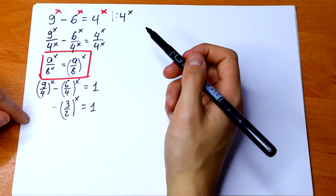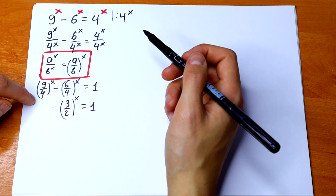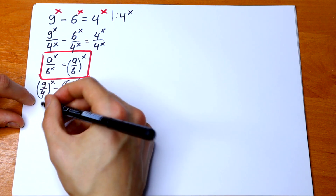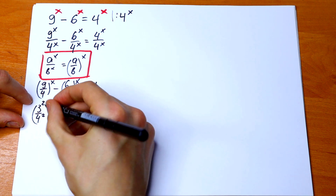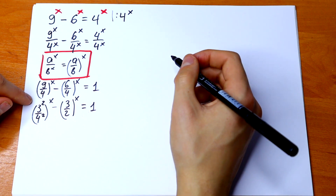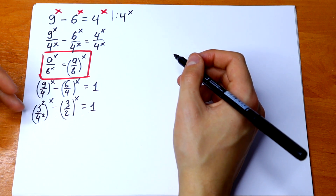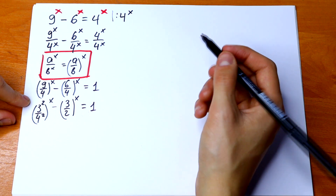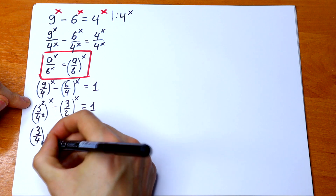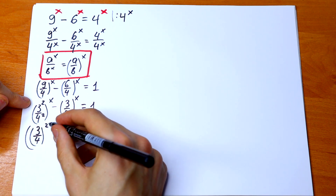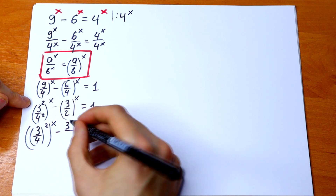I can express 9 as 3 squared and 4 as 2 squared. So (3 squared over 2 squared) all raised to the power x. Using the same rule again — different bases but same exponents — I can write this as (3/2) squared all raised to the power x.